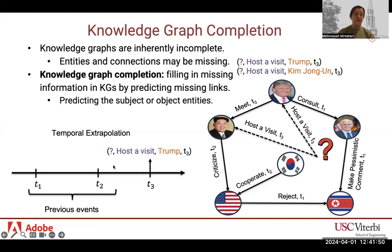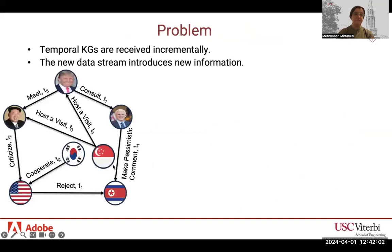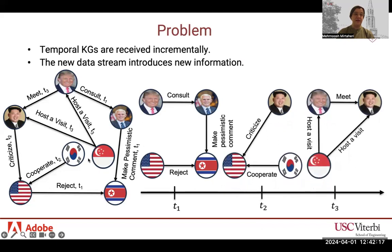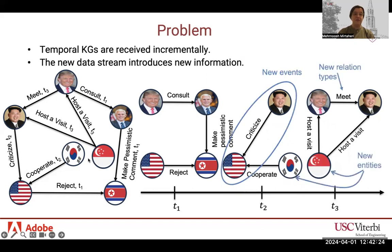In our work, we focused on temporal extrapolation, in which the state of the graph is known up to time t and we want to predict the events after that point. Most existing methods assume that the entire graph is available during training. However, in reality, temporal knowledge graphs are received and extracted incrementally, introducing new information containing new events, new relation types, and new entities.